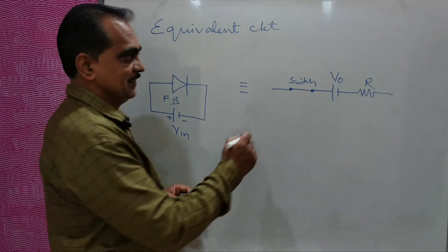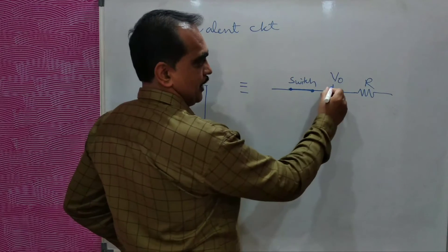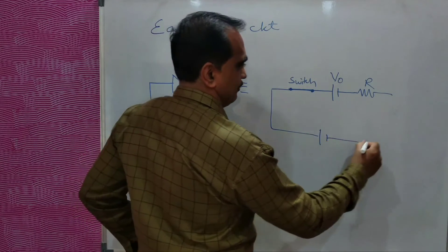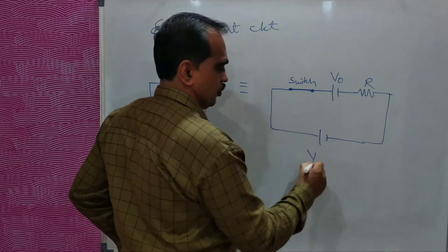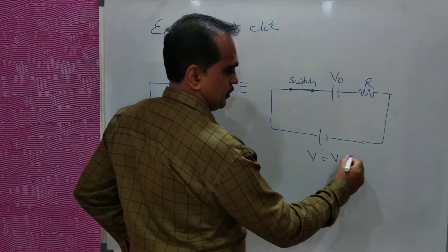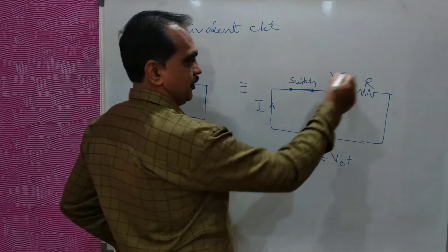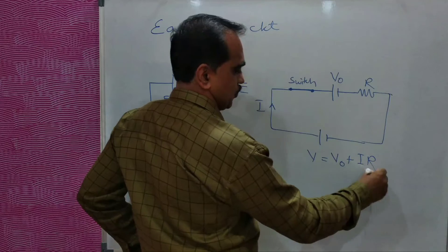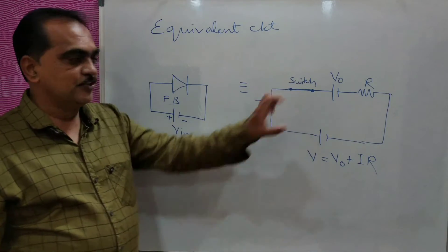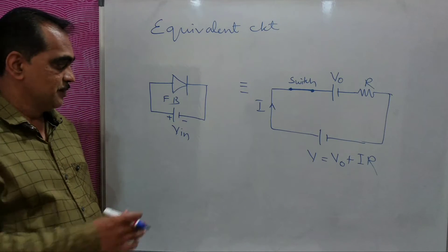Now in that case, the switch will be closed. Whatever voltage you are applying across the diode should be barrier voltage plus whatever current is flowing into the resistance — I into R. So if that much voltage is reached, the switch will be closed and the diode starts conducting.